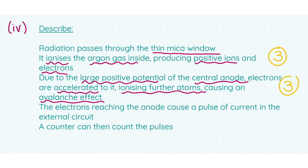For your final three marks, you have to say that the electrons reaching the anode cause a pulse of current in the external circuit, and then a counter, which you can see in the diagram, can then count the pulses. That will get you your last three marks. There are two other options which are acceptable in the marking scheme: the semiconductor Geiger-Muller tube and the gold leaf electroscope.